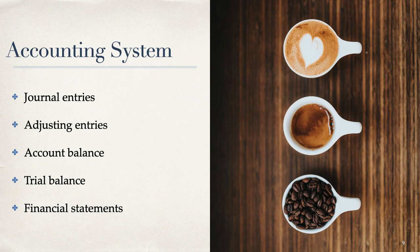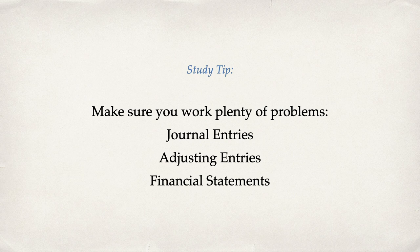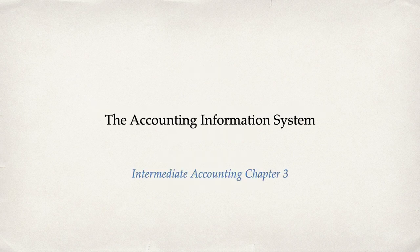In the accounting system, the key problem types you need to know are journal entries, adjusting entries, getting account balances, doing a trial balance, and preparing financial statements. If you're focusing on chapter three, make sure you can do all of these. This material was covered over several chapters in Financial Accounting but is included here as a review in Intermediate Accounting. Make sure you work plenty of problems — journal entries, adjusting entries, and financial statements. I'll have a follow-up video where I switch over to Excel and work through problems. Thanks for watching.